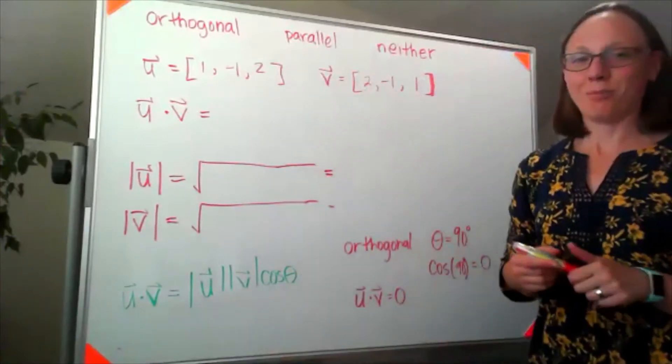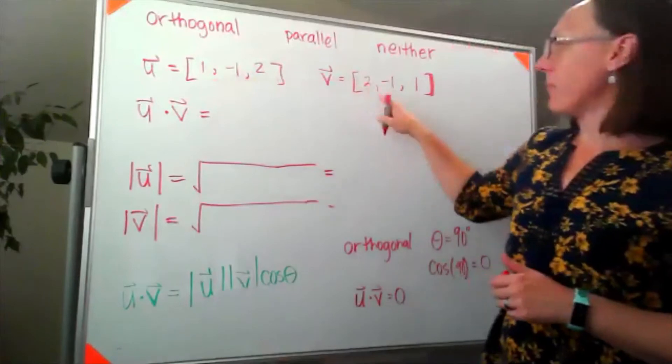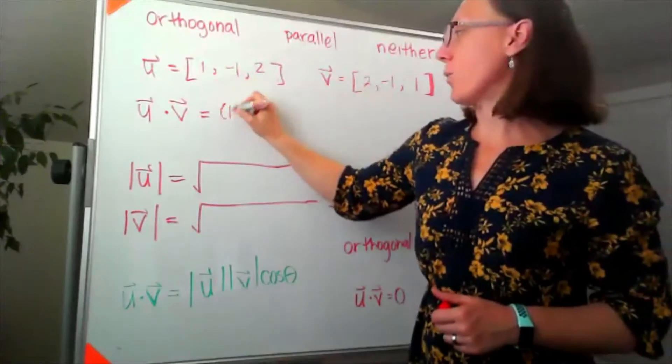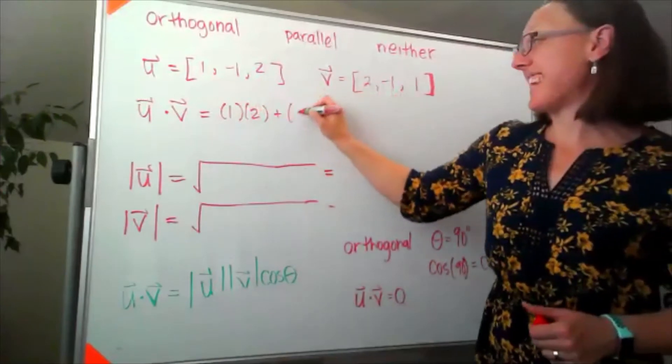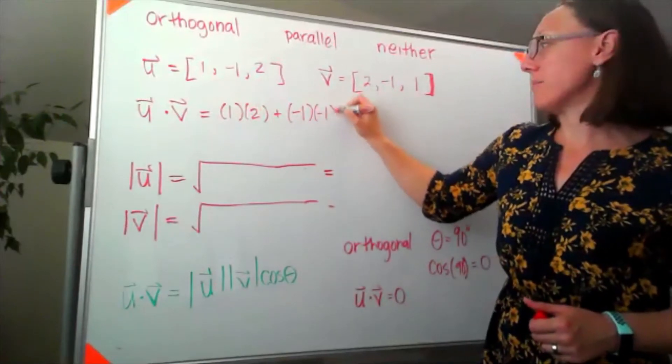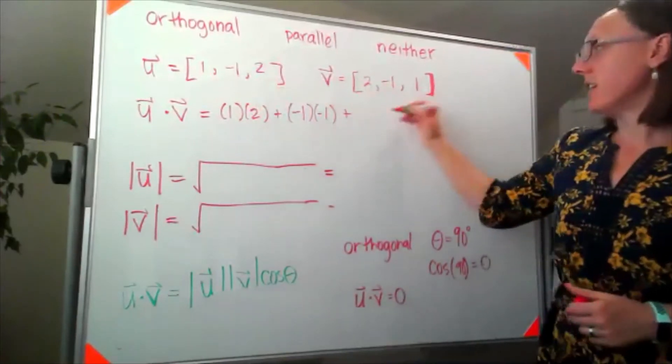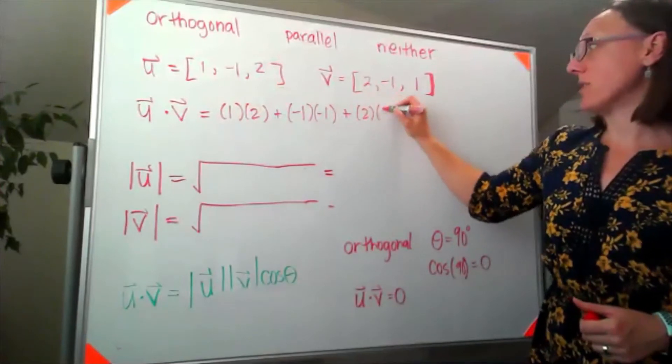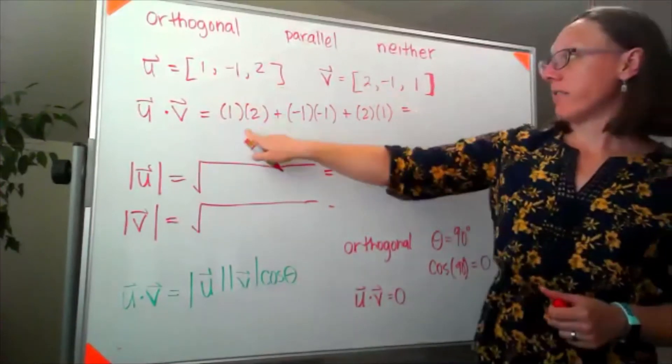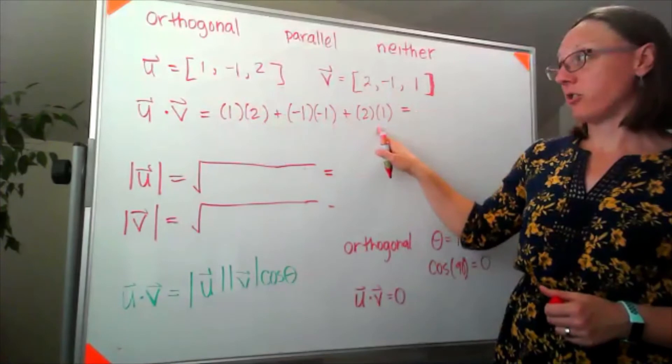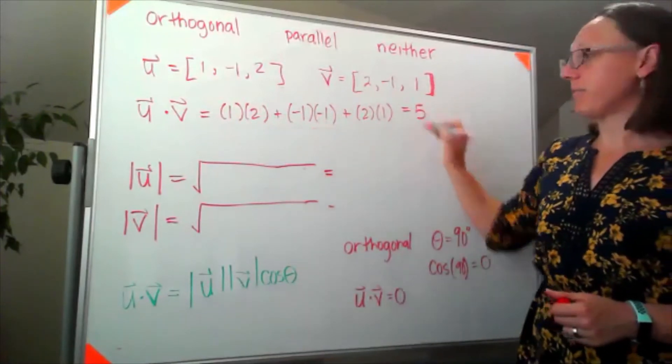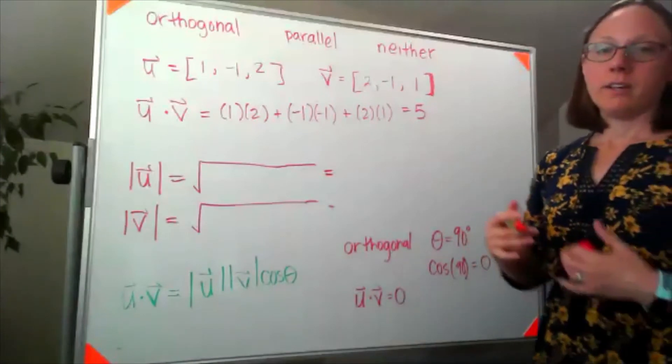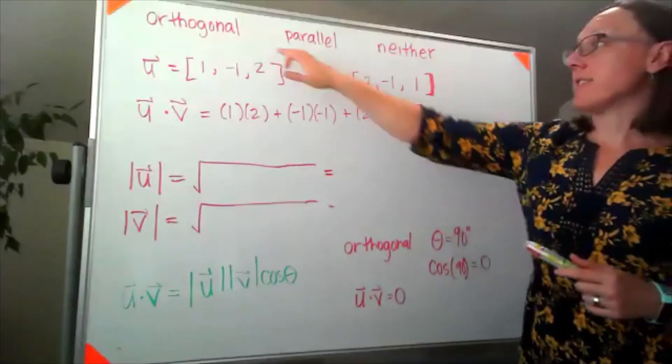Now let's start with our dot product. I'm taking my first components here. So 1 times 2, adding that to multiplication of my second components, negative 1 times negative 1, plus multiplication of my last components 2 times 1. So I've got 2, plus another 2 so I'm at 4, plus another 1 I'm at 5. We already know that it's not orthogonal.